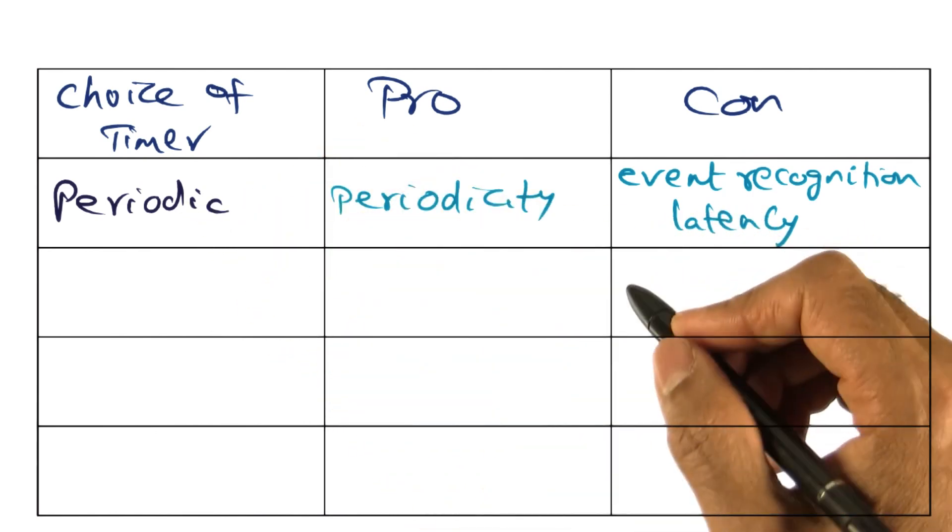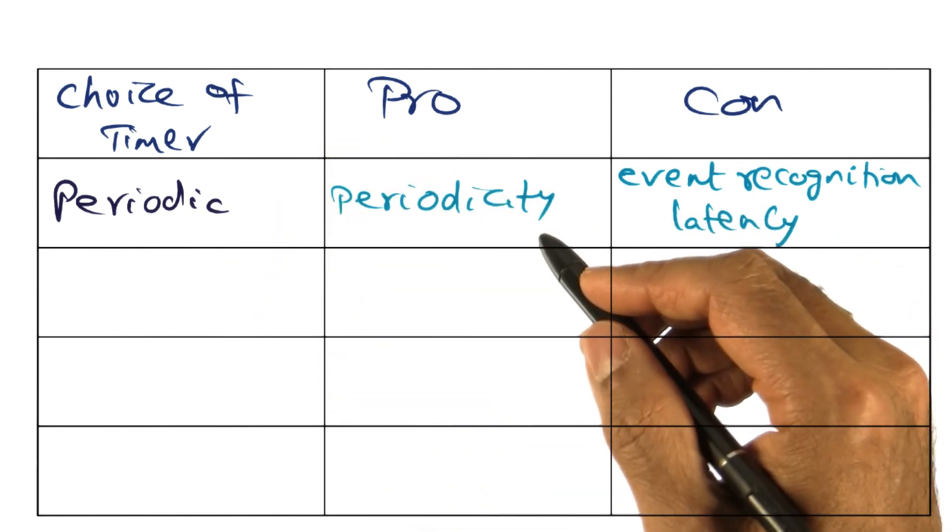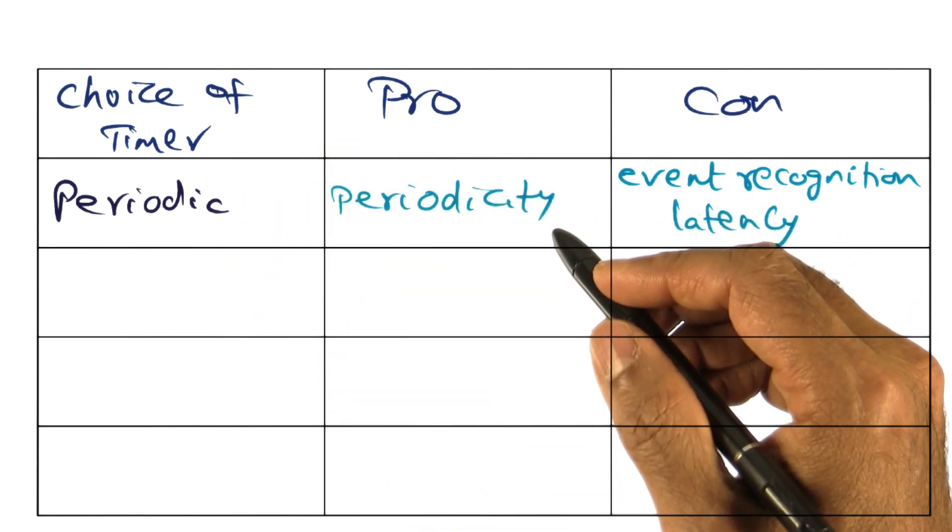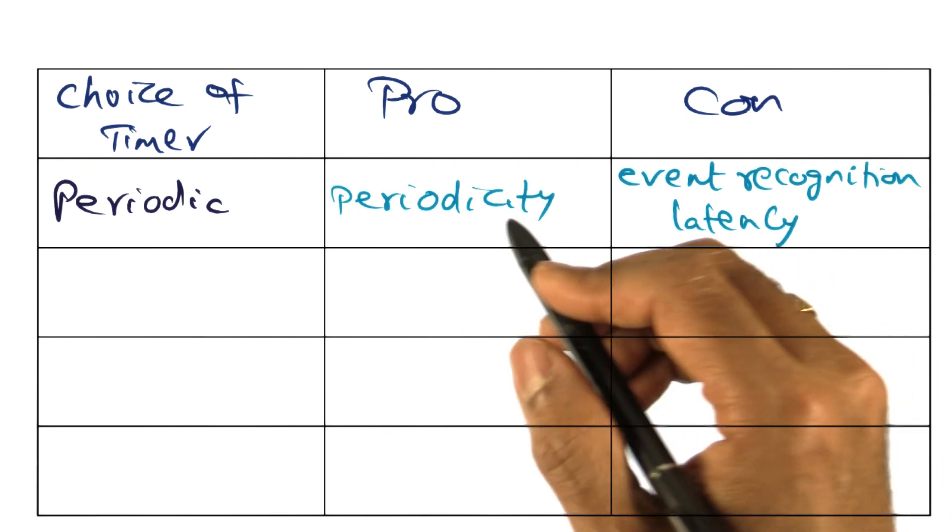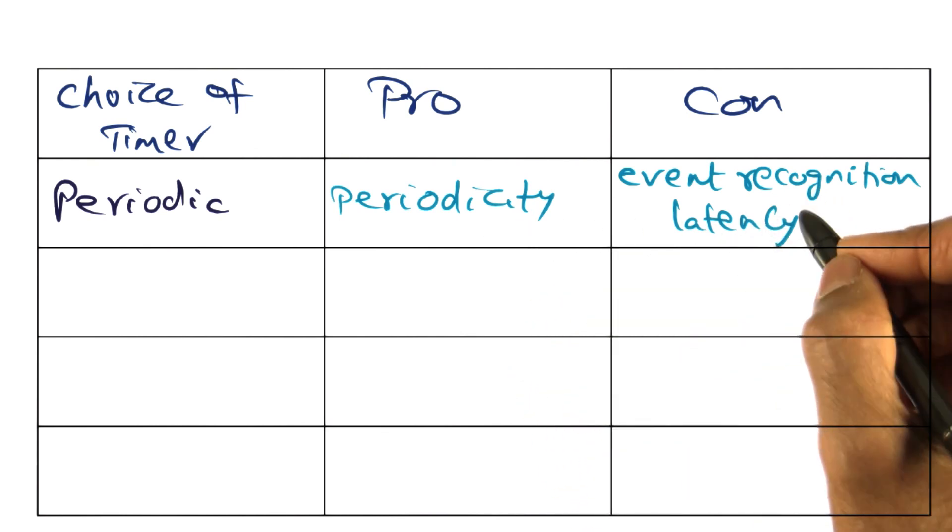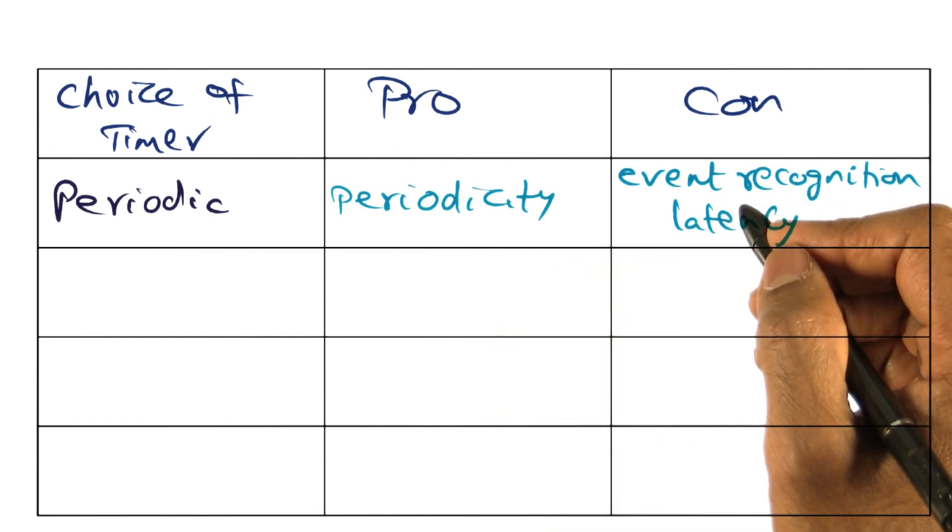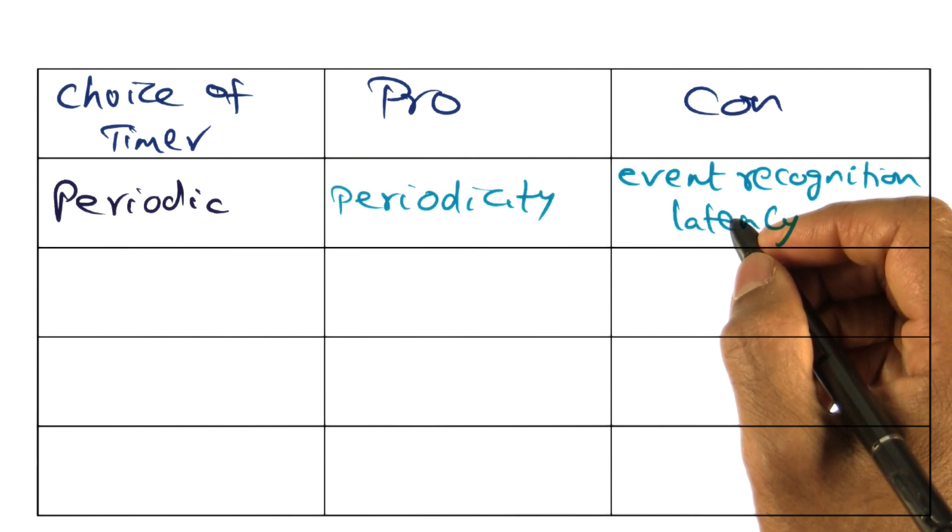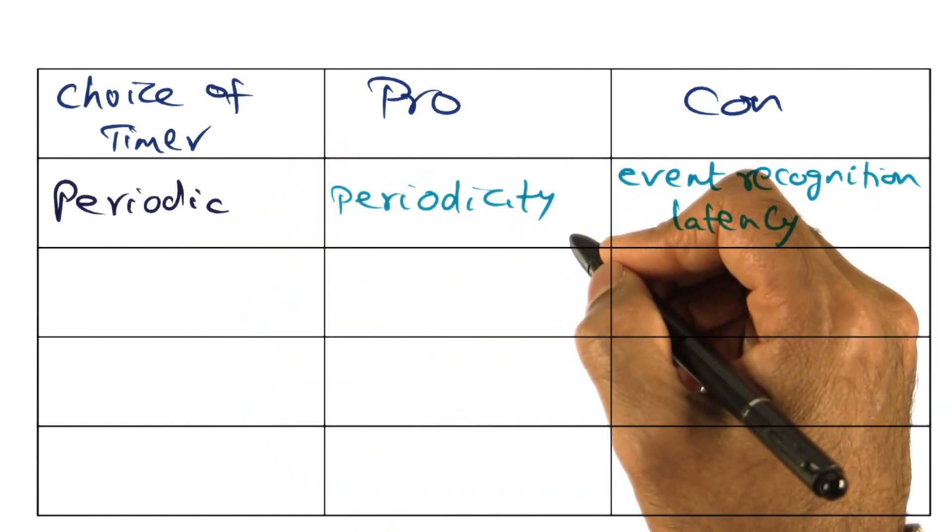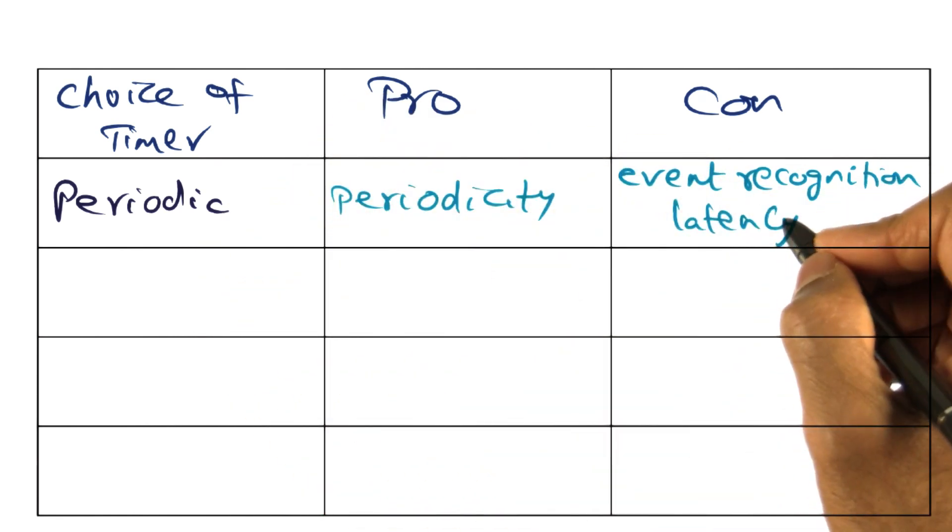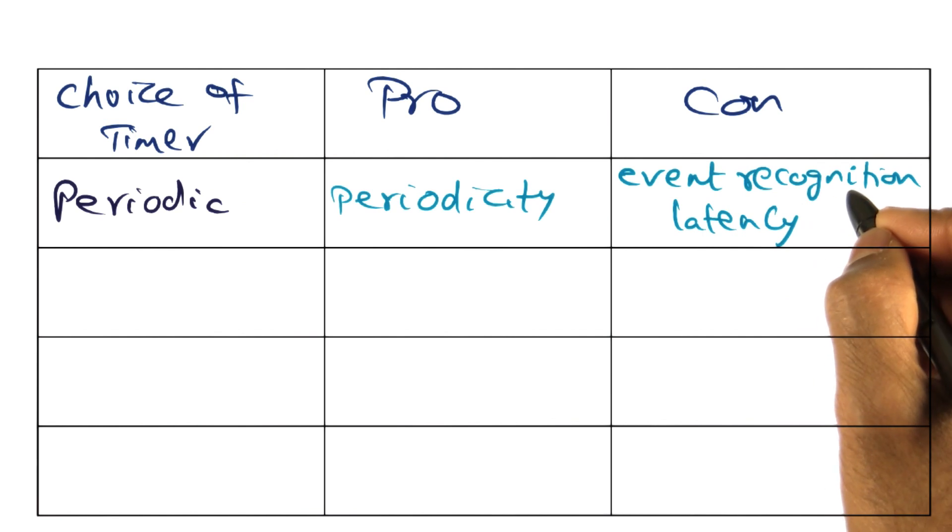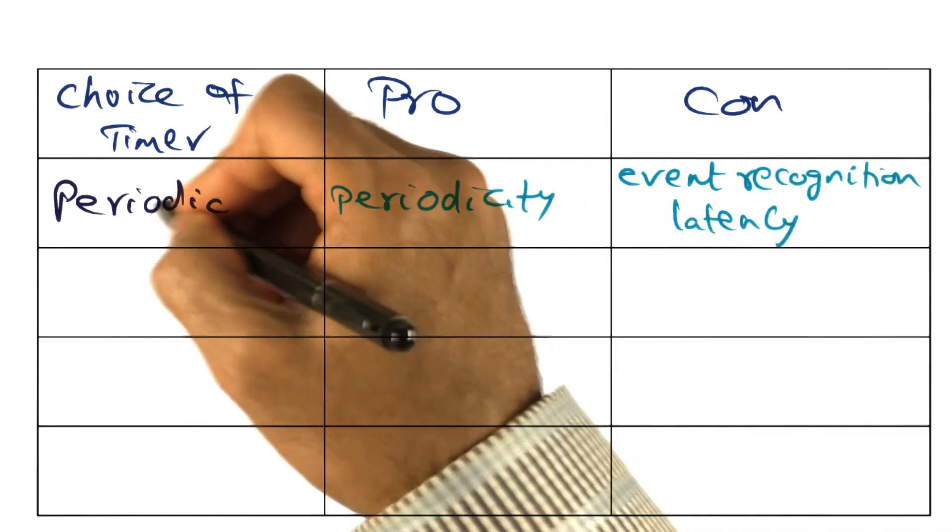That's the pro of a periodic timer, that the operating system is not going to be interrupted willy nilly, but it is going to be interrupted at regular periods. But the con is the event recognition latency because the event may have happened at a particular point in time, but because of the granularity of the periodic timer, the event is actually recognized at a much later point in real time. And that's the con for periodic timer.